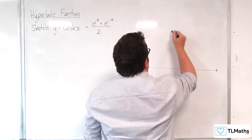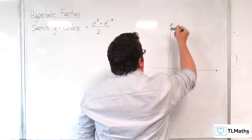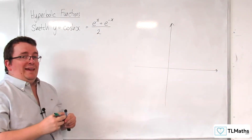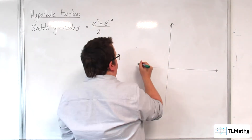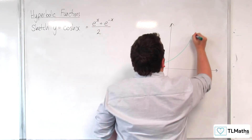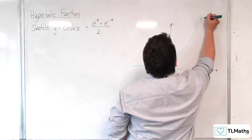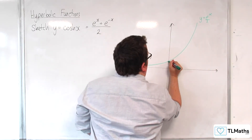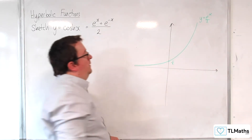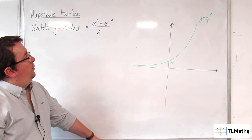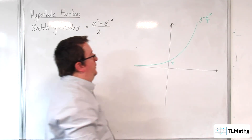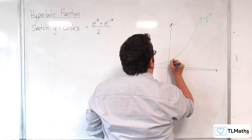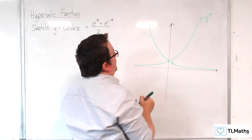Let's take a look at those. So y equals e to the x over 2 will look like this, where that's one half. And y equals e to the minus x over 2 looks like this.